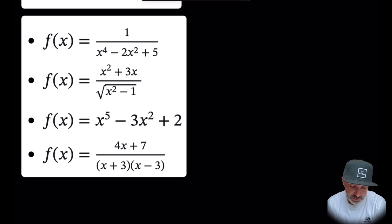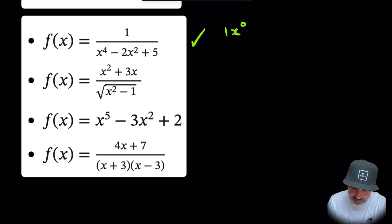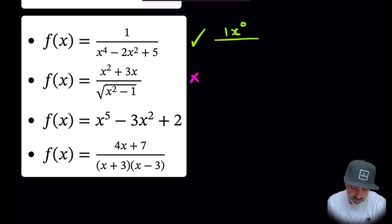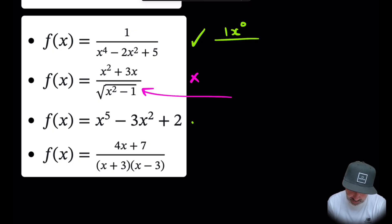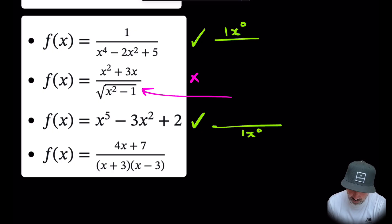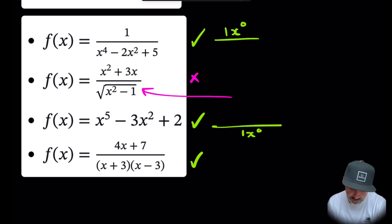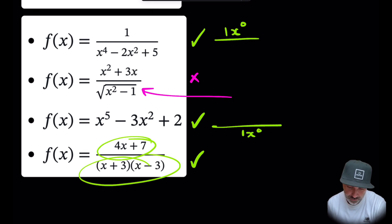Let's try this again with these four questions. Which are rational functions? The first one is a rational function — the polynomial on the numerator is just 1 times x to the zero, divided by a denominator which is a polynomial. The second one is not a rational function; it has x squared minus one to the half. The third one is a rational function — everything is divided by 1 times x to the zero, which is a simple polynomial. The fourth one is also a rational function because both numerator and denominator are polynomials.